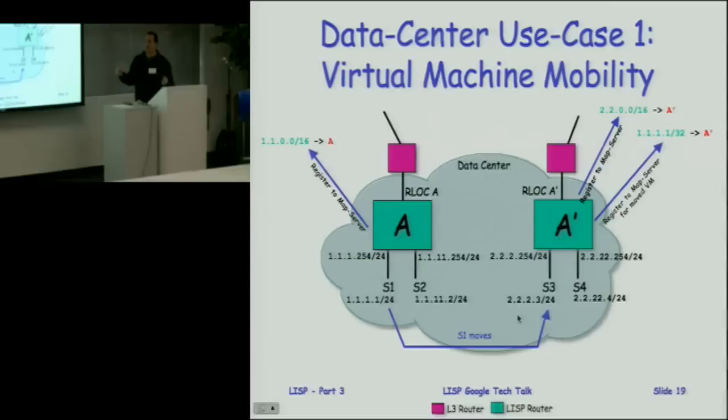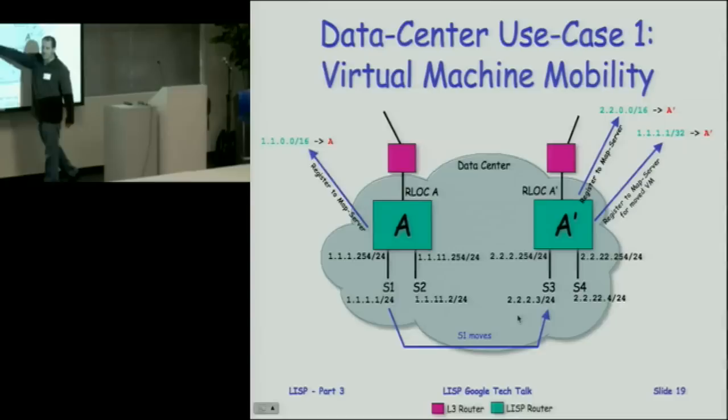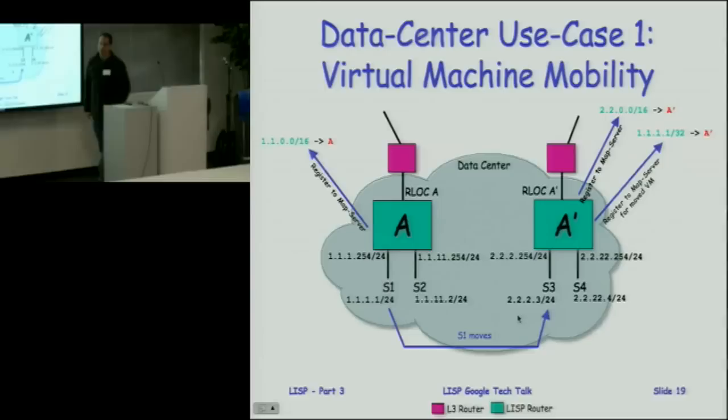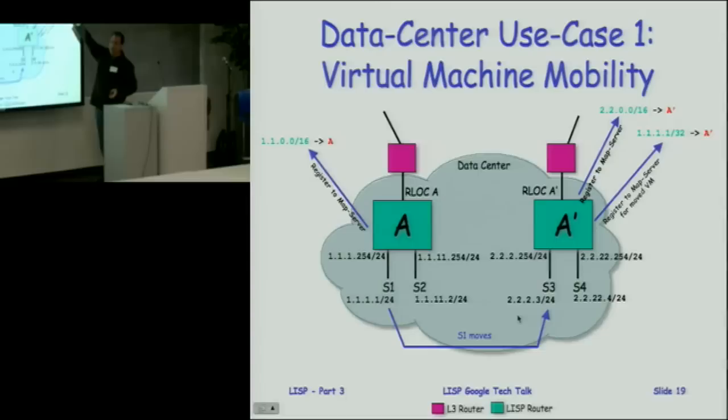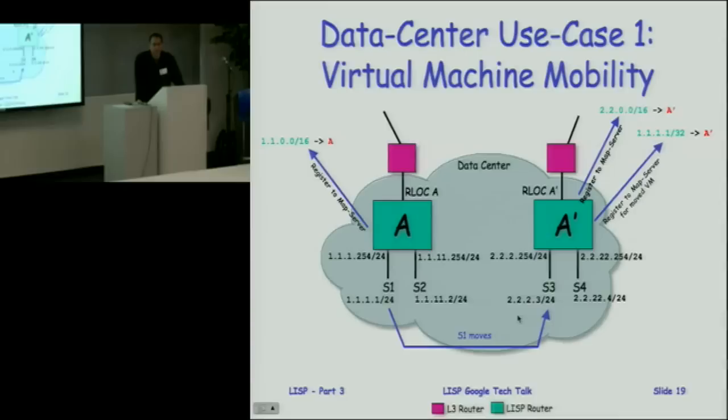If A is still getting packets for a moved host, it faces a policy decision: does it hairpin — decapsulate and re-encapsulate to the new location? That's just like mobile IP's triangle routing problem. The goal is to be better than mobile IP with point-to-point tunnels so stretch equals one — encapsulating from the client's ITR and decapsulating at A Prime which is an ETR. IPv6 mobile IP does eventually achieve optimized routing, but requires IPv6 forwarding in the core — a minor detail.